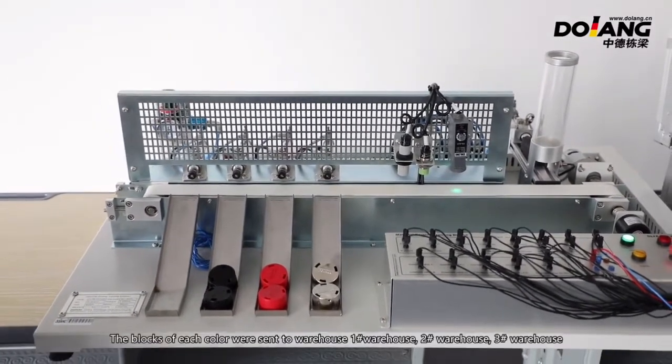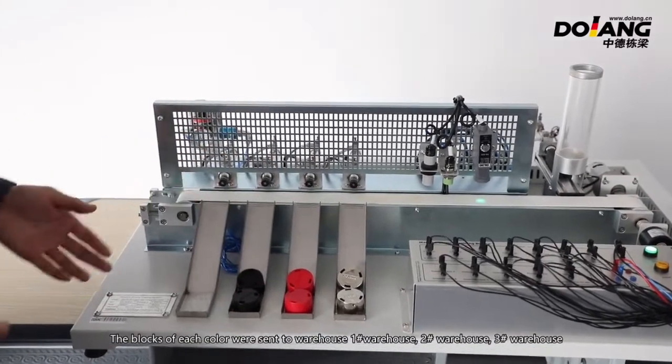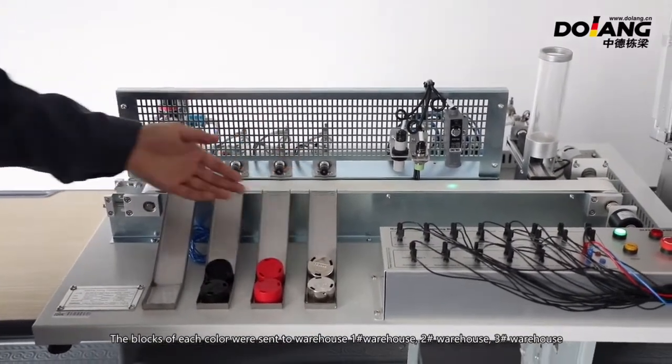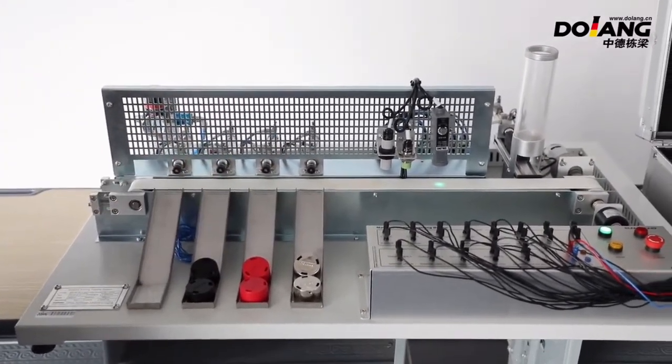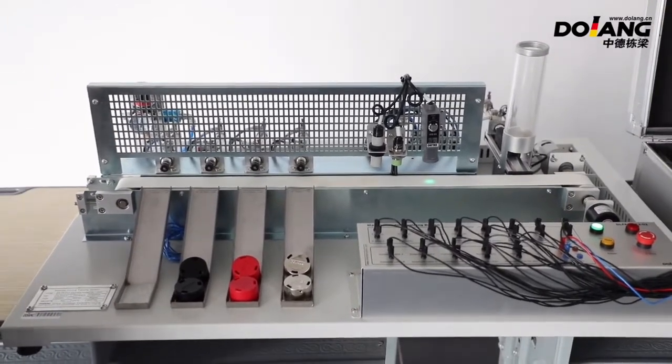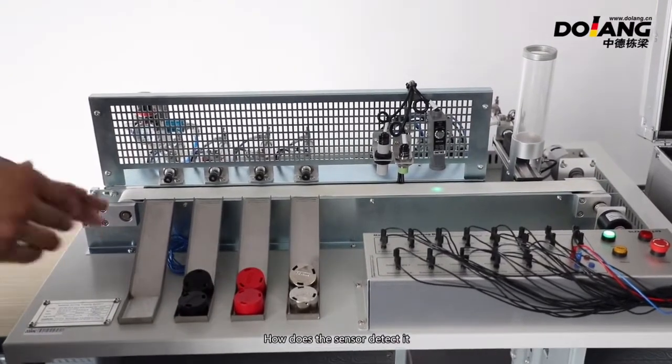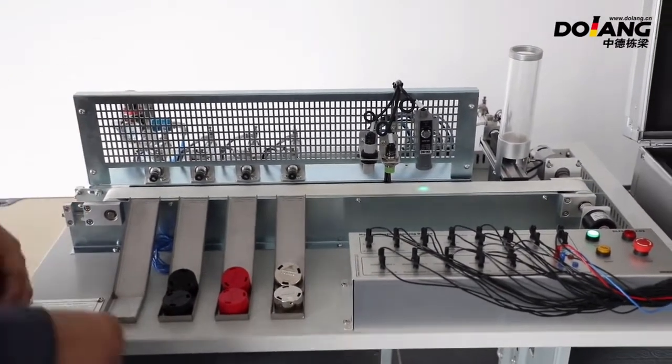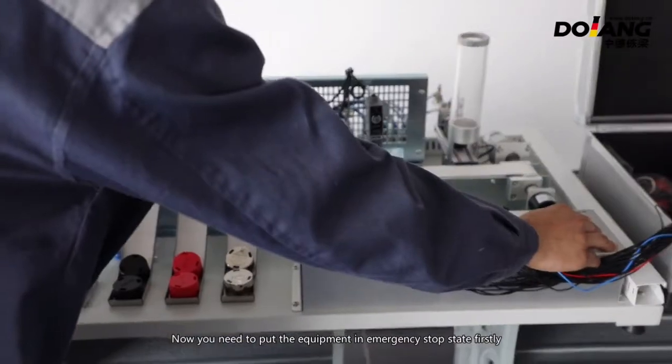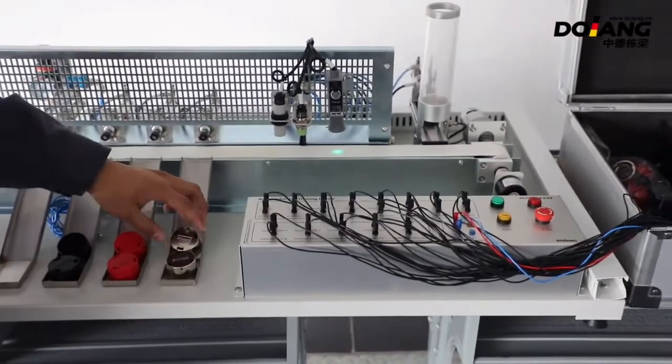It can be seen that the blocks of each color were sent to warehouse one, warehouse two, and warehouse three. How does it sort? It's through these three sensors. How does the sensor detect it? Now you need to put the equipment in emergency stop state firstly.